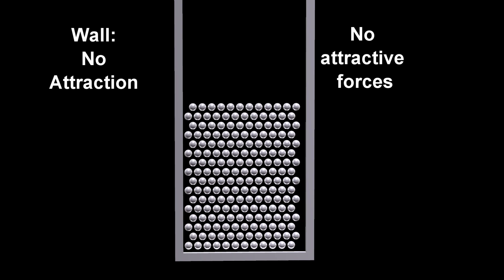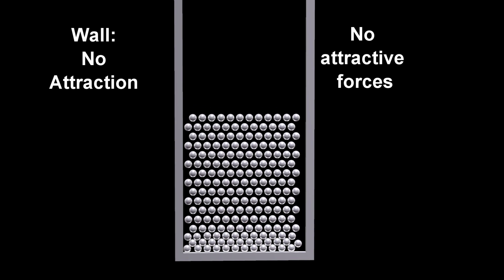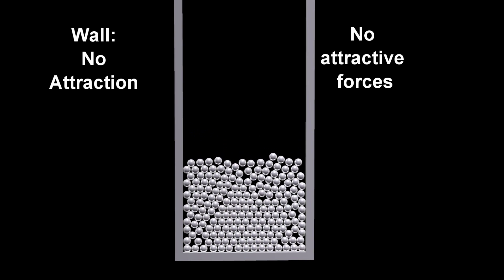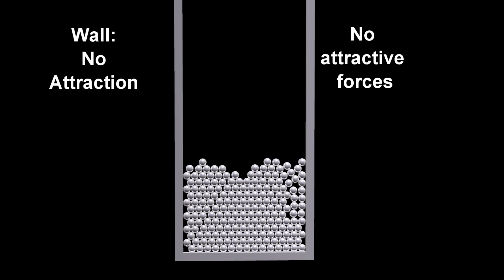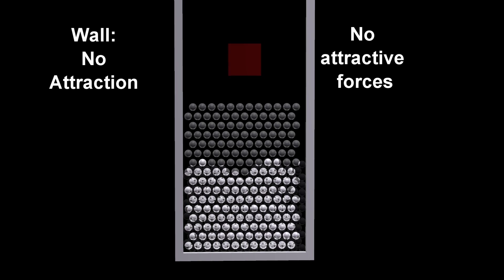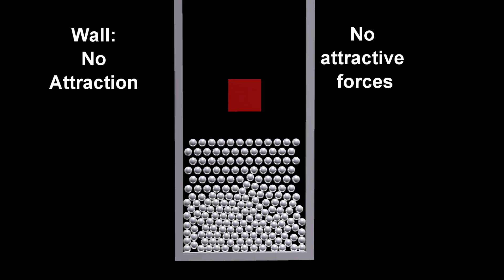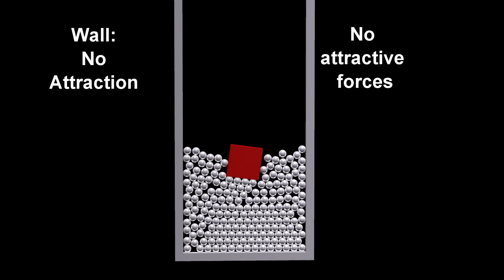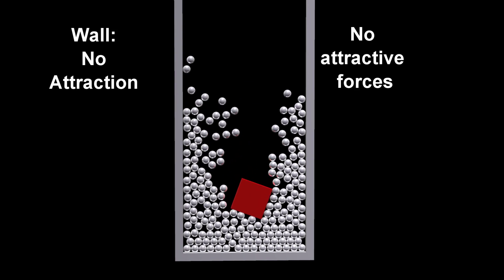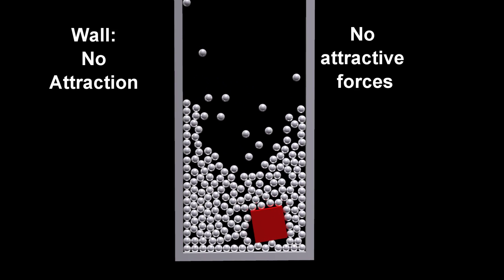The white spheres exert no attractive forces on each other. When the red box, with a density of 20 times each of the spheres, falls on the white balls, this is the result.